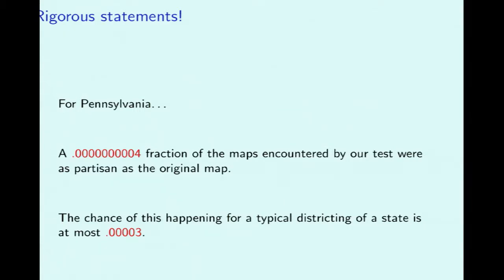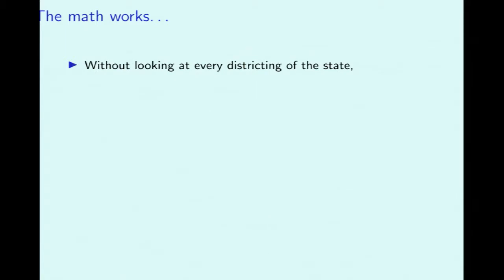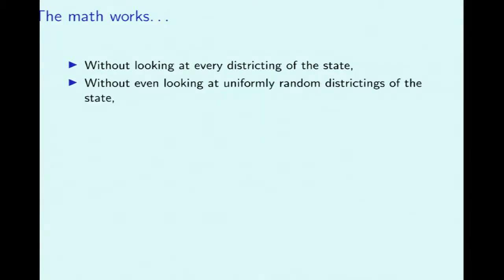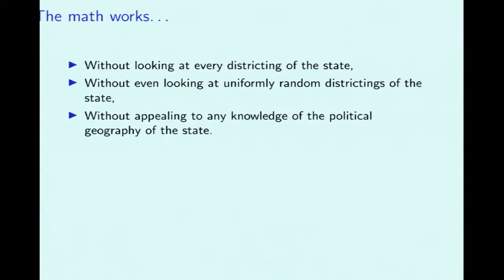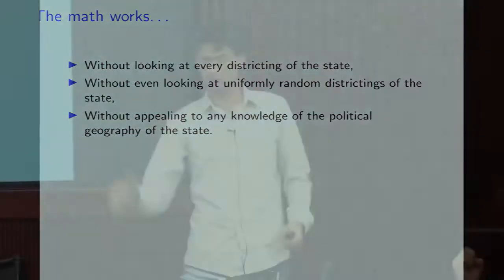This is a rigorous statistical statement that doesn't depend on having a way of drawing truly random maps. The method works without enumerating all districtings of a state — which could easily exceed the number of elementary particles in the universe. It also works without looking at genuinely random districtings of the state. Crucially, it works without claiming to use anything about the political geography of Pennsylvania — I can just apply it to any state.